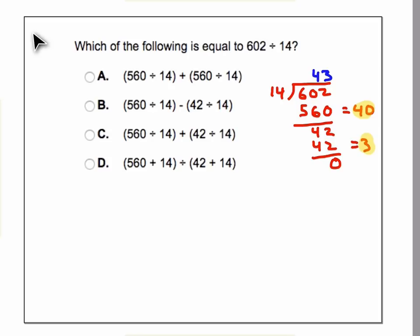Well, if you look carefully, B has the right setup, but we are subtracting these, so that's not right. C also has the correct setup, and this time we're adding, so yes, that could be right.